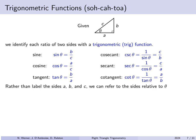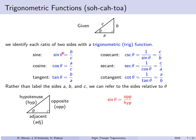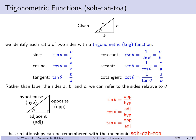Rather than labeling sides a, b, and c, we refer to them by their relationship to angle theta. The side across from theta is the opposite side, the side next to theta is the adjacent side, and the hypotenuse is the hypotenuse. Then sine of theta equals opposite over hypotenuse, cosine equals adjacent over hypotenuse, and tangent equals opposite over adjacent. The mnemonic SOH CAH TOA helps remember these ratios.